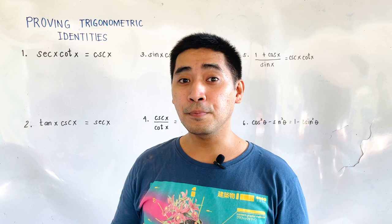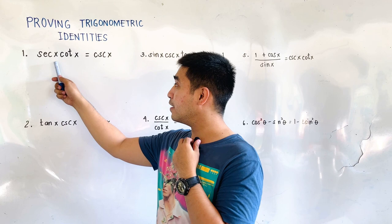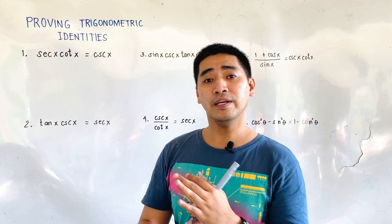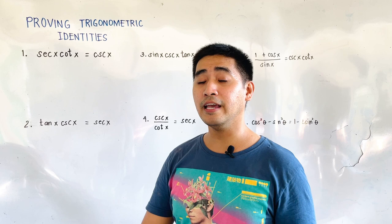Let's start with our first given. We are given secant of x times cotangent of x is equal to cosecant of x. In proving trigonometric identities, let us remember what we have learned from fundamental identities: the quotient identity, the reciprocal identity, and the Pythagorean identity.